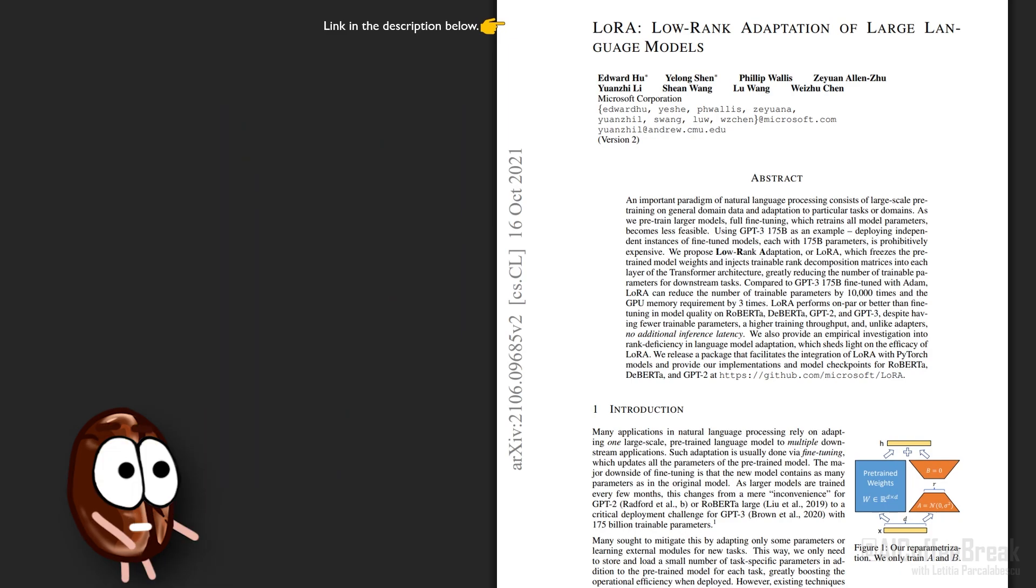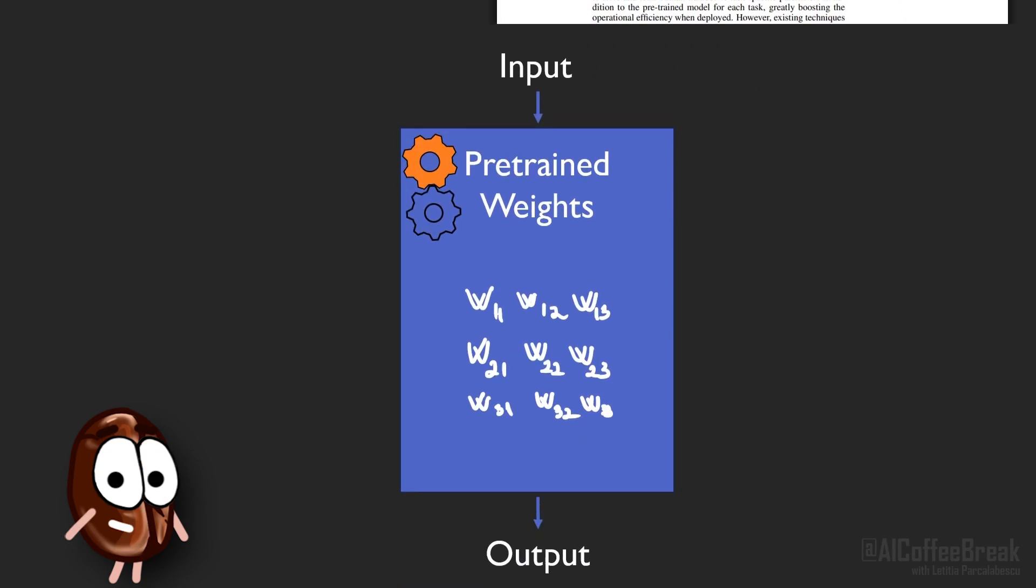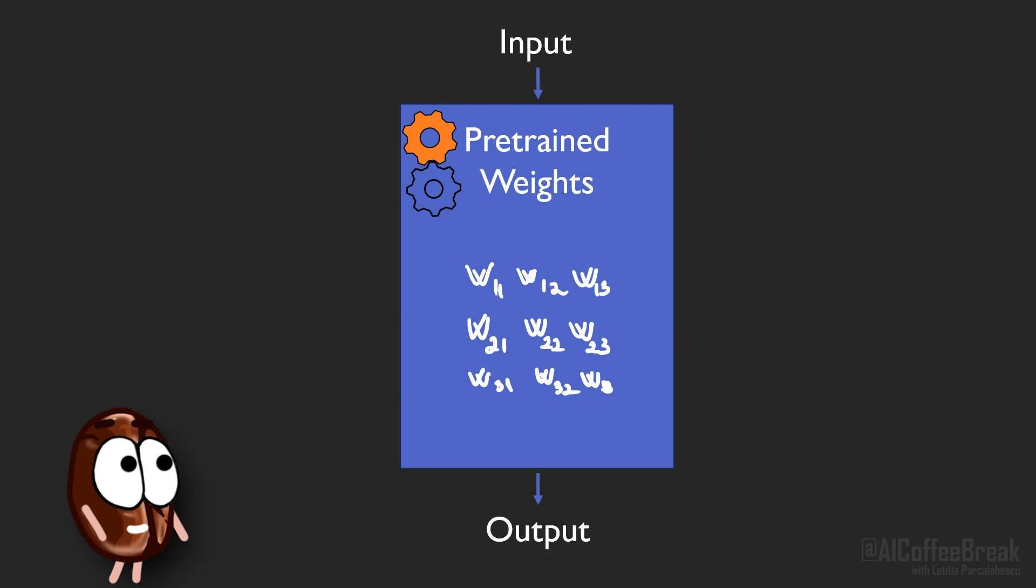LoRa was introduced by this paper from Microsoft and is surprisingly less complicated than we expected and we'll explain it. It works like this. With LoRa, instead of modifying all these models' weights during fine-tuning, we freeze them. Meaning that we leave them unchanged and do not do anything to the copy of the downloaded model.